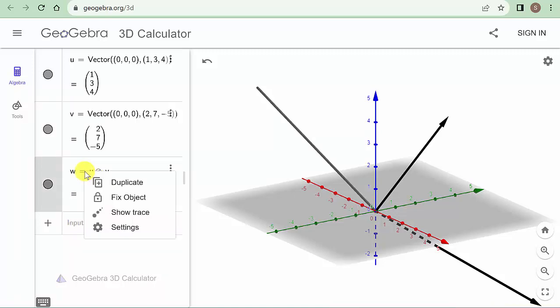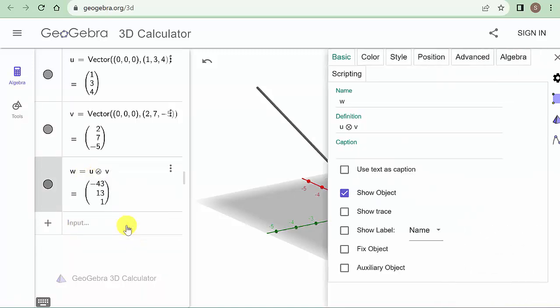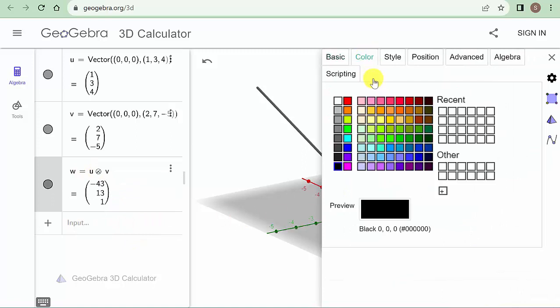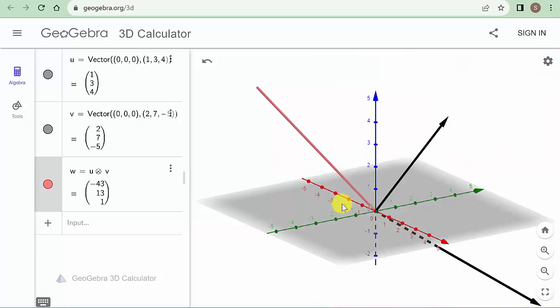And so I think I can click on here and hit settings and we can go to color and let's make this one red. And you can see there's the cross product right here. That's your cross product.